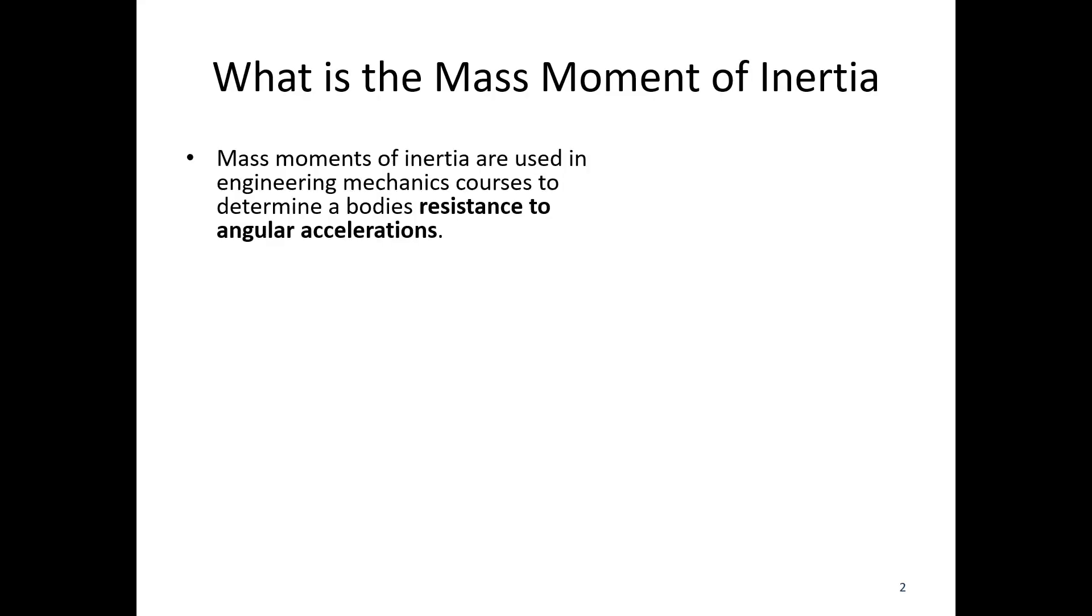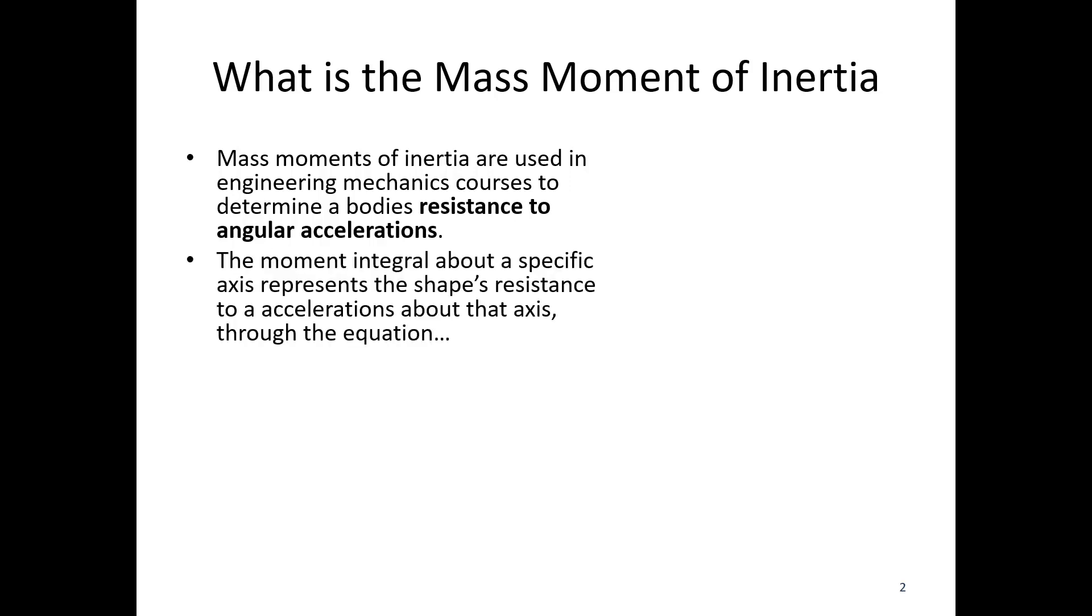So what is the mass moment of inertia? The mass moment of inertia is used in engineering mechanics courses to determine a body's resistance to angular accelerations. The moment integral about a specific axis represents the shape's resistance to angular accelerations about that axis through the equation M equals I alpha.